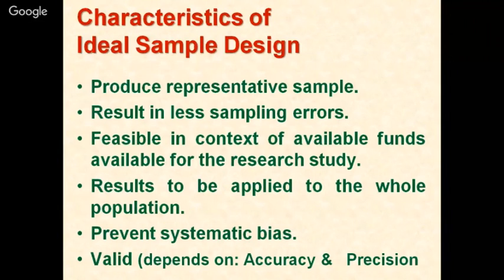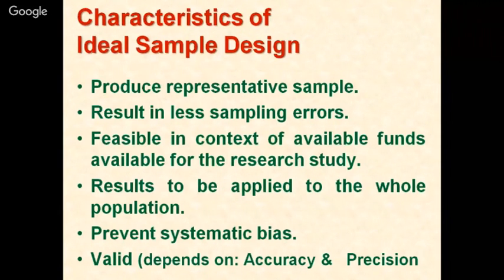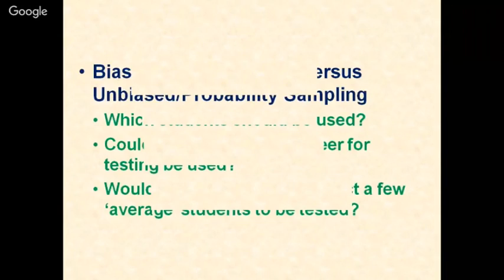An ideal sample design should be able to prevent systematic bias — sampling must be unbiased and probability-based. It must provide valid results, and validity depends on two important dimensions: accuracy — the data must be accurate and correct — and precision. The key sampling terms are: population elements are the people or products; the defined target is the population; the sampling unit is the available elements in the defined population; and the sampling frame covers all of these.